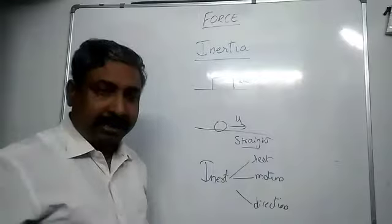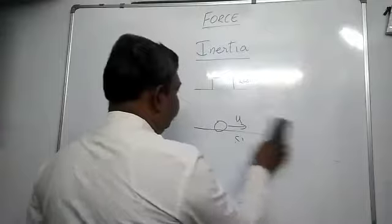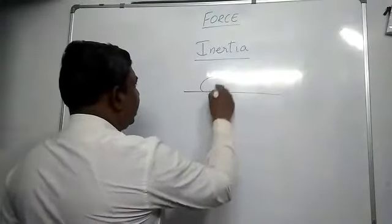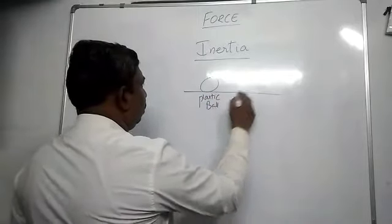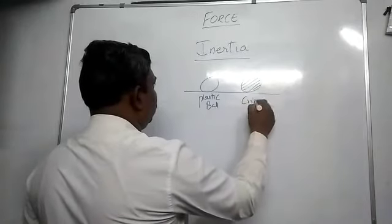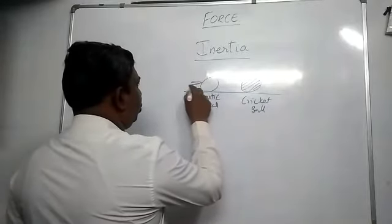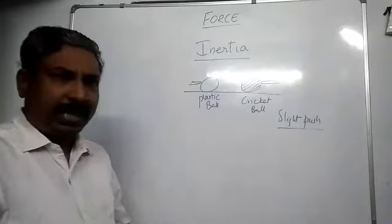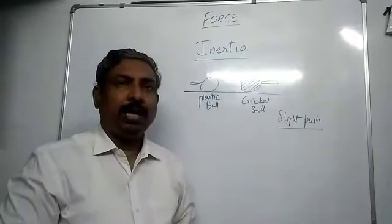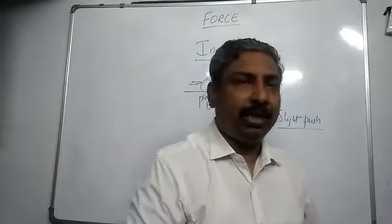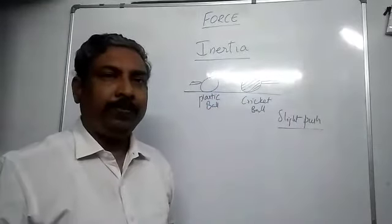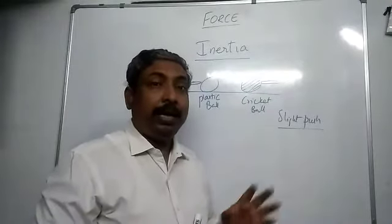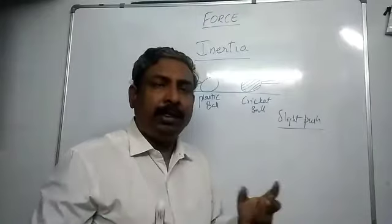Let us understand inertia better with examples. Take a plastic ball and a cricket ball. Try to push both with a slight push. Which one easily moves and changes its position? The cricket ball is harder to push because it doesn't want to change. It is the heavier one. So which shows more opposition to change, the lighter one or the heavier one? The heavier one shows more opposition.